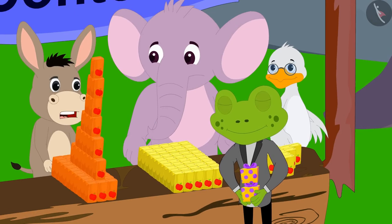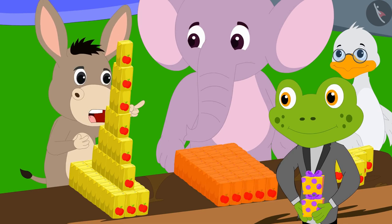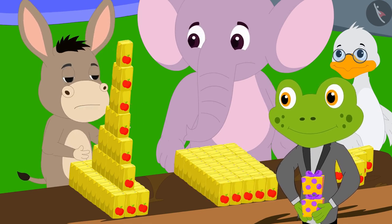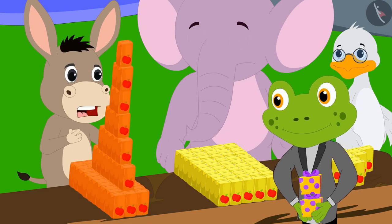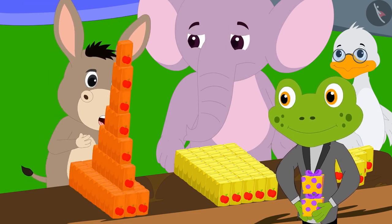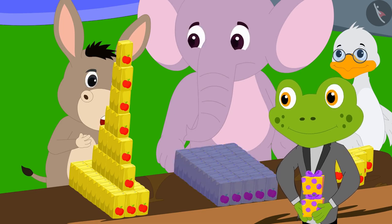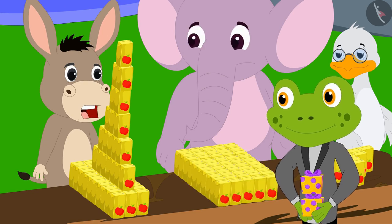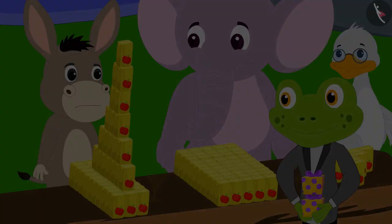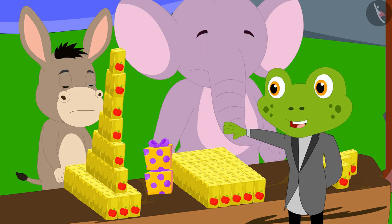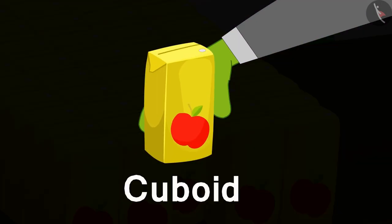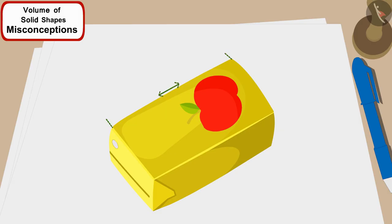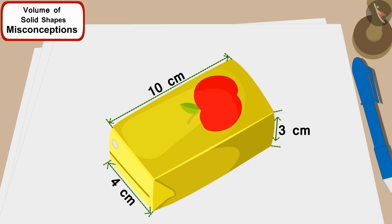Bola said: 'No, my shape is much longer than Appu's shape, so the total volume of the juice cartons I am using will be more than the total volume of the boxes made by Appu — only I should get that reward.' Taru said: 'Look, let me explain to you both. Each juice box is cuboid shaped, with a length of 10 centimeters, width of 4 centimeters, and height of 3 centimeters.'